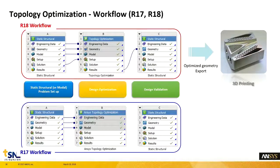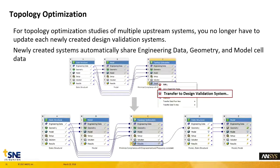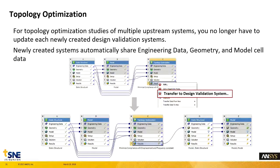워크플로우를 살펴보면, 17 버전 대비 18 버전은 바로 검증 해석 시스템을 생성할 수 있게 만들어졌었는데, 19 버전에서는 앞에 여러 개의 시스템이 연결되어 있을 때, Transfer Design Validation System을 클릭하시면 이전에는 바로 앞에 정의된 시스템 하나만 검증 시스템으로 만들어졌습니다. 19 버전부터는 선행되었던 모든 시스템이 그대로 넘어와서 생성되는 것을 보실 수 있습니다. 다중 시스템을 사용하셨던 분들은 좀 더 간편하고 빠르게 작업하실 수 있게 되었습니다.